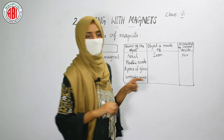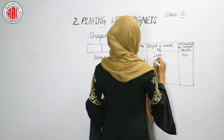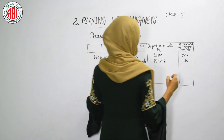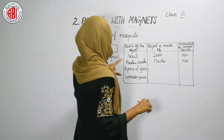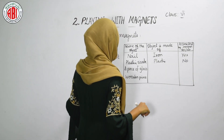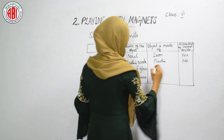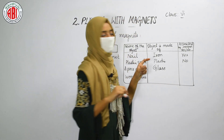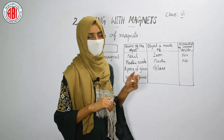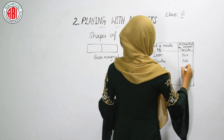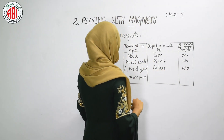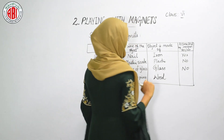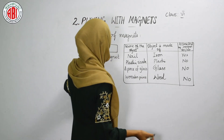The next one is a plastic scale. Plastic scale is made up of plastic, and plastic is a material that cannot be attracted by the magnet, so it is not attracted. The next material is a piece of glass. Glass is also a material that cannot be attracted by a magnet, so it is not going to be attracted. And the last one is a wooden piece. Wood is not attracted by this bar magnet either.